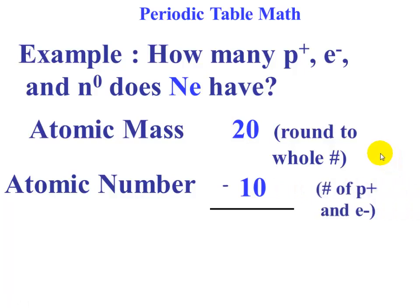That is the number of protons—and also electrons, but really for this we just worry about the protons. This will tell us the difference. The difference is 10, and this 10 is the number of neutrons.